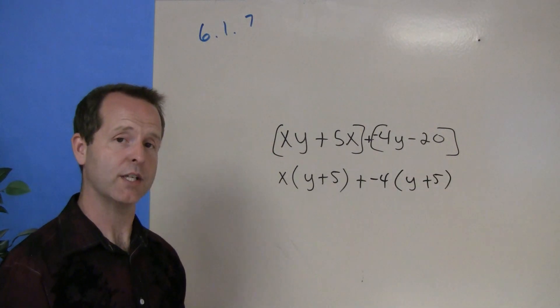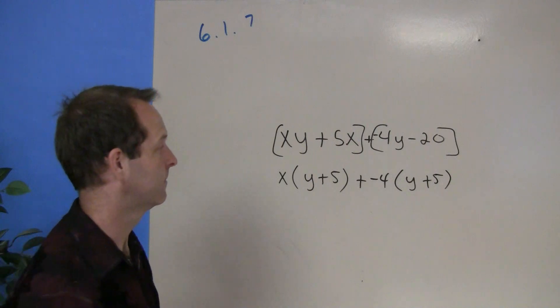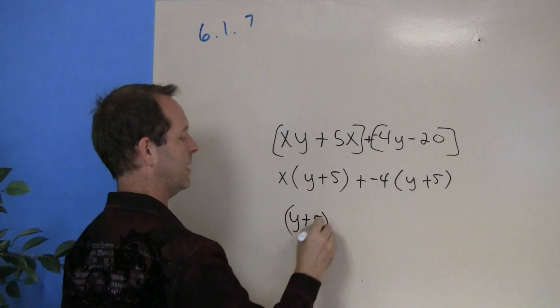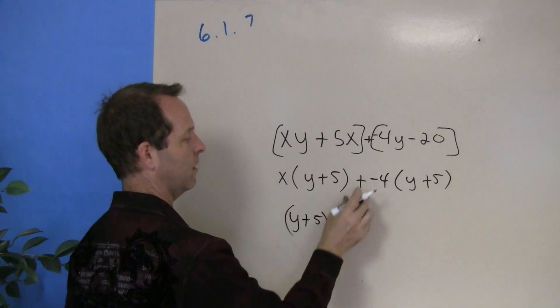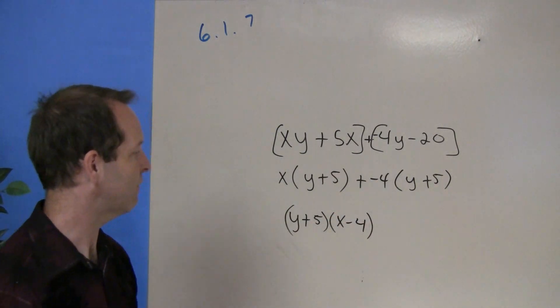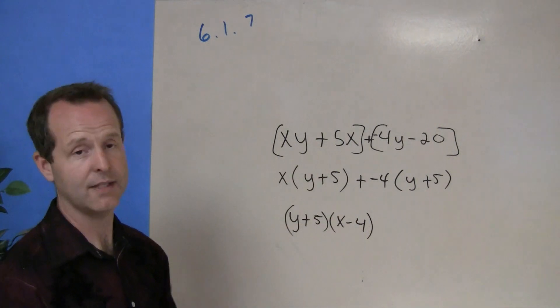And there you can see in both sections I do have something that's common. The y plus 5 is common. Then what's left is this x plus a negative 4 or minus 4. And so that's the factorization of this initial statement right there.